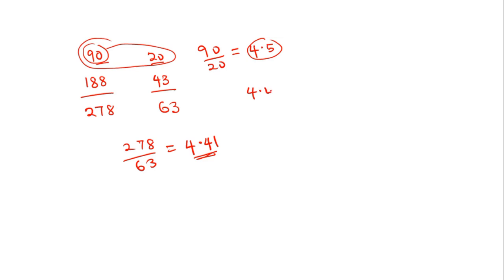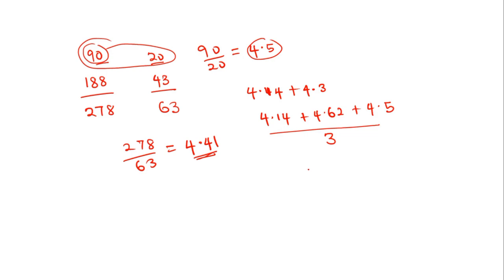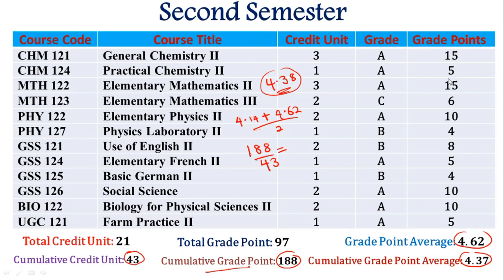Some people erroneously calculate CGPA by averaging the GPAs. For example, 4.55, plus 4.14, plus 4.62 — add those three and divide by 3 — gives 4.42. You can see that this is at variance with the correct value of 4.41. The correct method is: sum your total grade points and sum your total credit units across all semesters, then divide. For a four-year course with eight semesters, you sum all grade points and all credit units across all eight semesters.